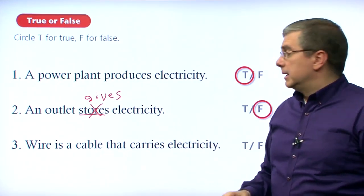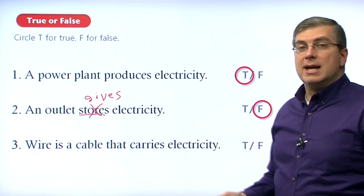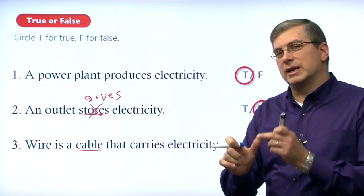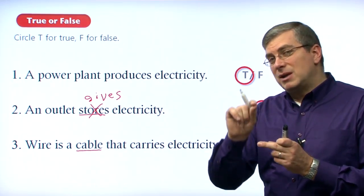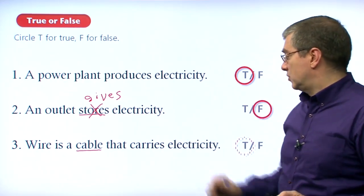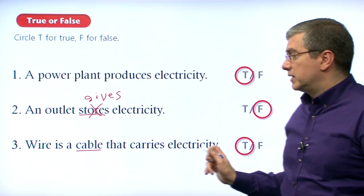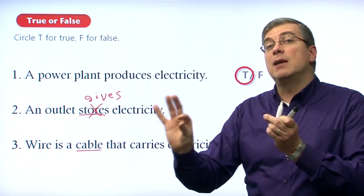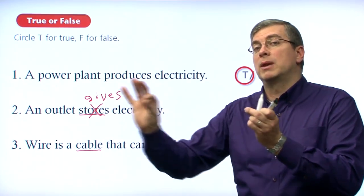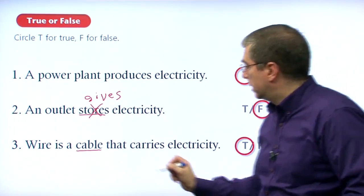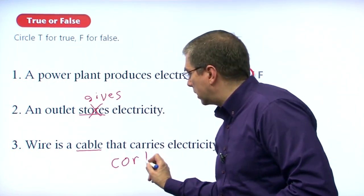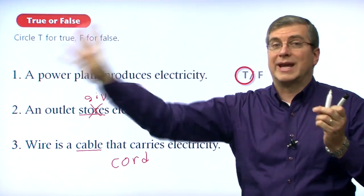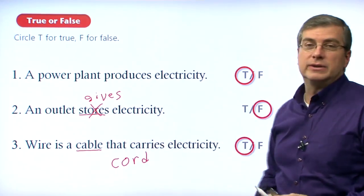Number three: wire is a cable that carries electricity. When we talked about the cord, I mentioned there are two parts — a plug and the cable — and inside the cable is a wire. Wire is two parts: metal and plastic. Anytime you see that, it's a cable that carries electricity from one place to another. Usually we find cables in a cord, but cables can also be those big wires we saw in the video. Wire is cable that carries electricity. That wraps it up for the vocabulary section — let's take a short break and come back to look at the reading.